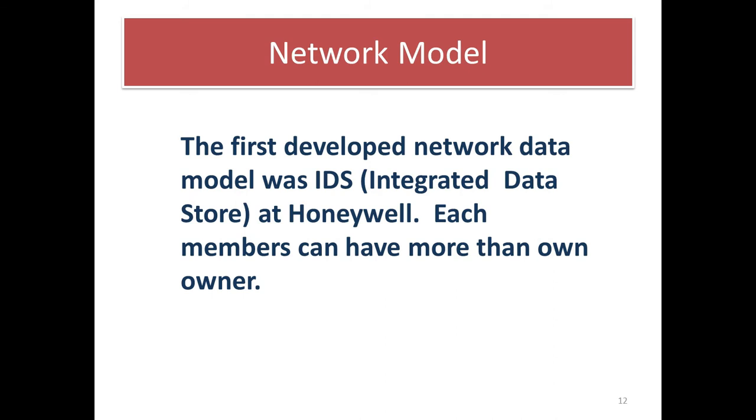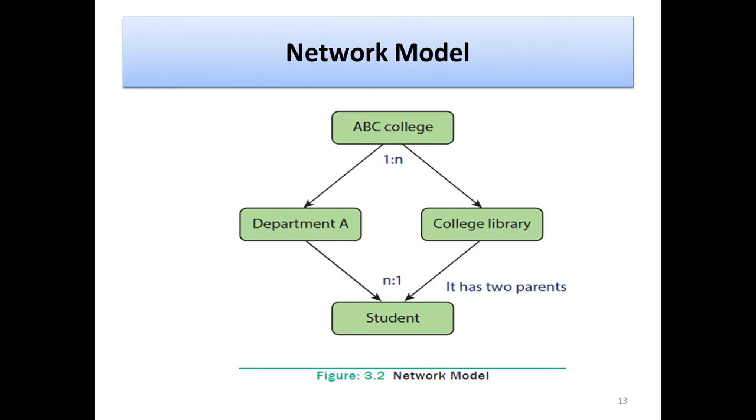Then, network model. The first developed network data model was IDS. IDS means integrated data store at Honeywell company. Each member can have more than one owner in the network model. In this model, assume that ABC college, department, college library, student. It has the two parents, one member. It is a simple example for network model. You refer the book also.